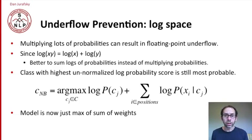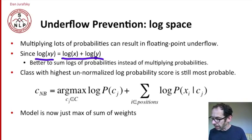There are some important details for the computation in Naive Bayes. One is underflow prevention. Multiplying lots of probabilities can result in floating-point underflow. We talked about this for language modeling. Since by the definition of logarithm, log(xy) = log(x) + log(y), we store our probabilities in the form of logs and we add them instead of multiply them.